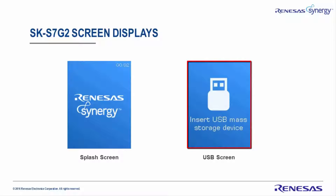After several seconds, the screen changes to the USB screen, determined by the presence of the USB mass storage device. This screen is displayed when a USB mass storage device is not detected. Certain devices are recognized fast enough for the application to skip this screen and jump straight to the main screen; others will require additional time to fully initialize before being recognized by the Synergy board. It will also be displayed when no mass storage devices are plugged in.